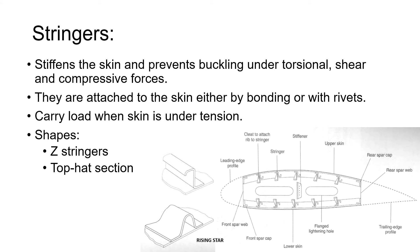A large contribution to the strength and stiffness is made by the skin along with stringers. Stringers stiffen the skin and they prevent buckling under torsional shear and compressive forces. They are attached to the skin either by bonding with adhesive or using rivets. They carry load when the skin is under tension. There are two shapes of stringers mostly found on an aircraft: the first one is the Z-stringer, and the next is the top edge section.